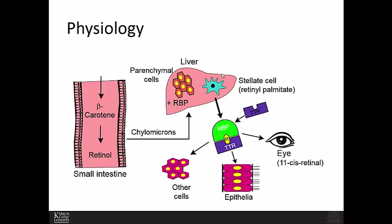In the liver, vitamin A tends to be converted to retinol palmitate, which is the storage form of vitamin A. Once released by the liver into circulation to meet cellular needs, it is transported through the plasma by retinol-binding protein and transthyretin to cells of the eye or epithelial cells throughout the body.